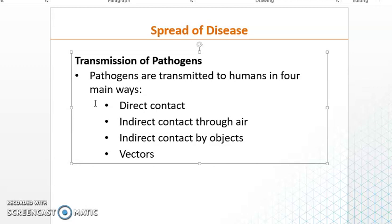Vectors are living things that can transmit and spread the pathogen without being affected themselves. It can be a mosquito or any other insect. Vectors can spread disease from animal to human, from human to human, or from animal to animal — it does not have to be between a human and an animal specifically.